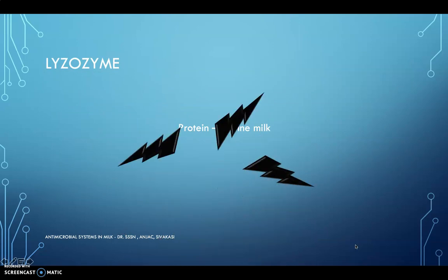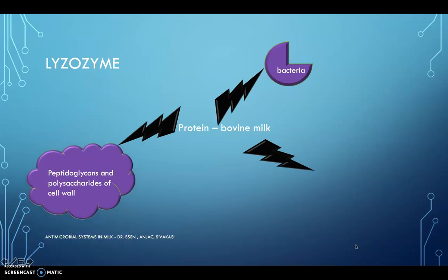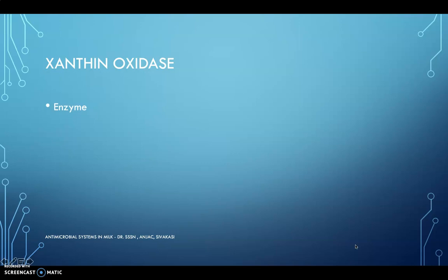Next is lysozyme. Lysozyme is also a protein present in bovine milk. It inhibits bacteria by rupturing the peptidoglycan and polysaccharides of the cell wall, since bacterial cells are largely made up of these two layers. The cell membrane is inhibited by lysozyme. In addition to that, it plays a major role in inhibiting the vegetative cells of Bacillus.